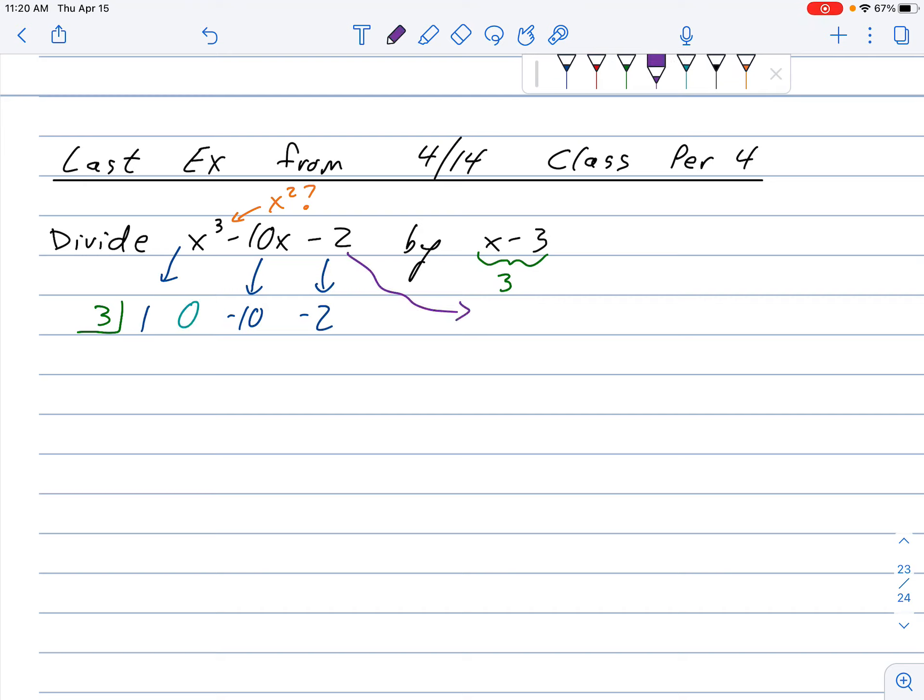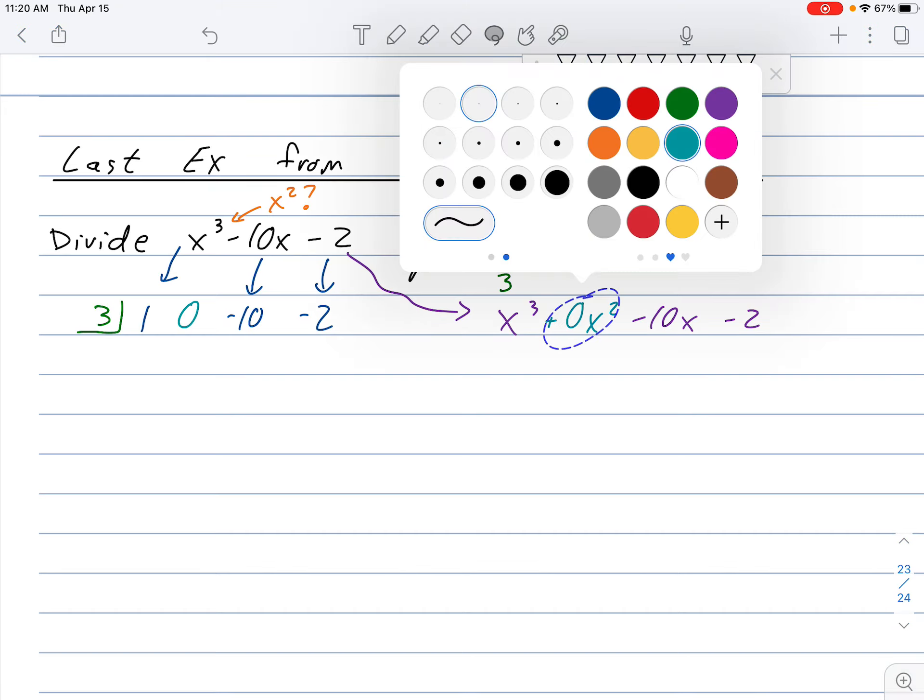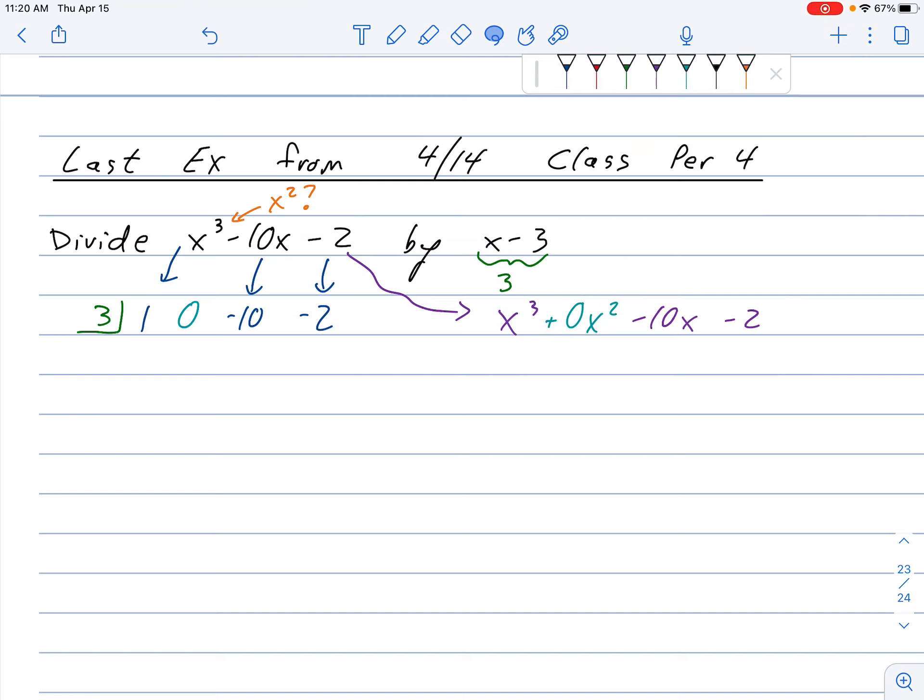So it's almost as if we're kind of viewing this as x to the third minus 10x minus 2. And I'm saying, well, let's just pretend there's a 0x squared in there. And that's what we're kind of saying is if there should, like normally I would expect to see it in exactly descending order. So I pop a 0 in there to kind of save the spot.